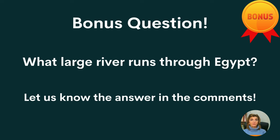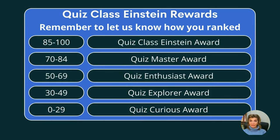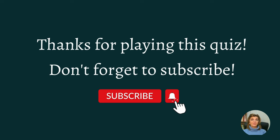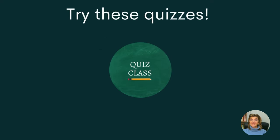Bonus question: what large river runs through Egypt? Let us know the answer in the comments. Also, for question 31, that instrument was the piccolo. Here we have our quiz class Einstein rewards — tell us what you got in the comments. Thanks for playing this quiz, don't forget to subscribe and hit that notification bell. We will see you next time.